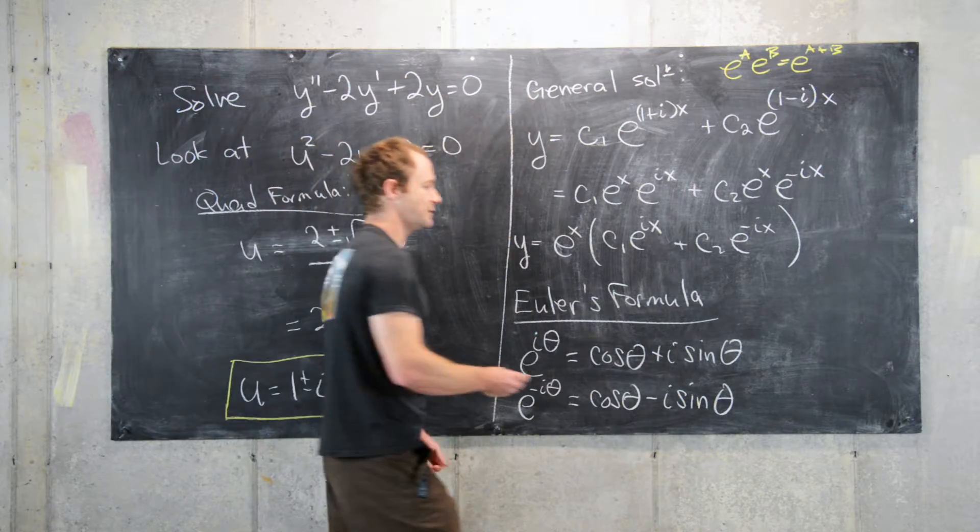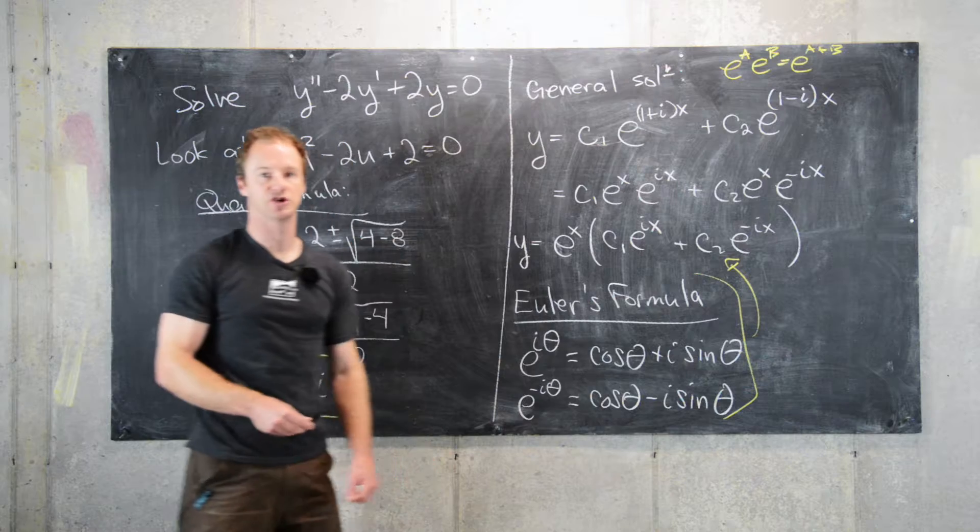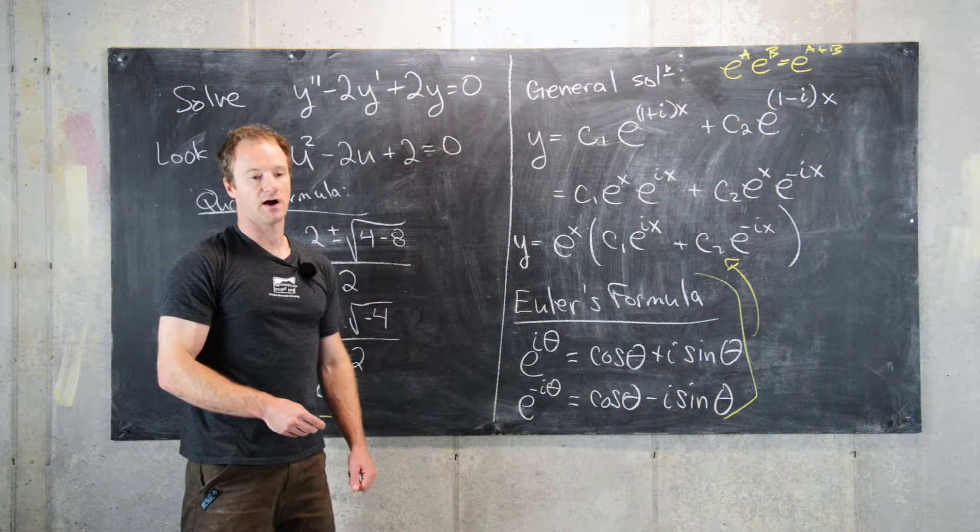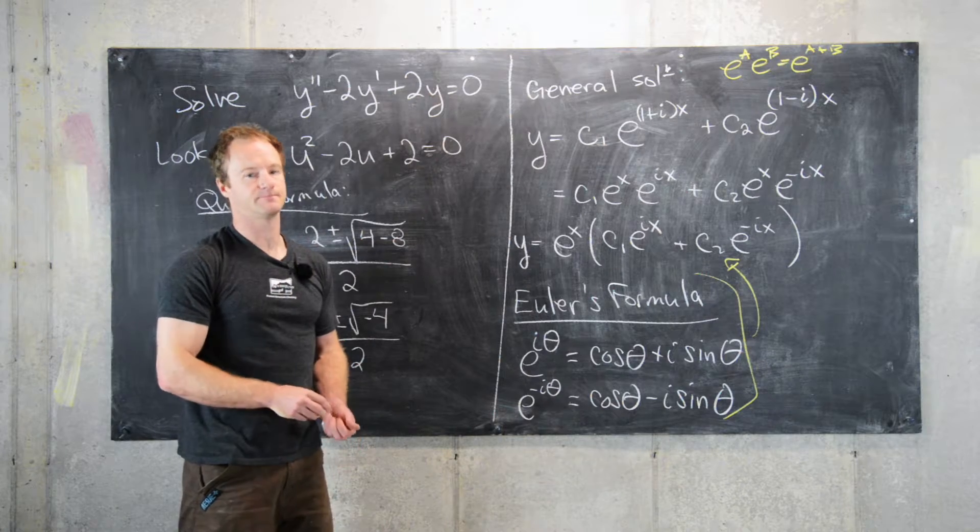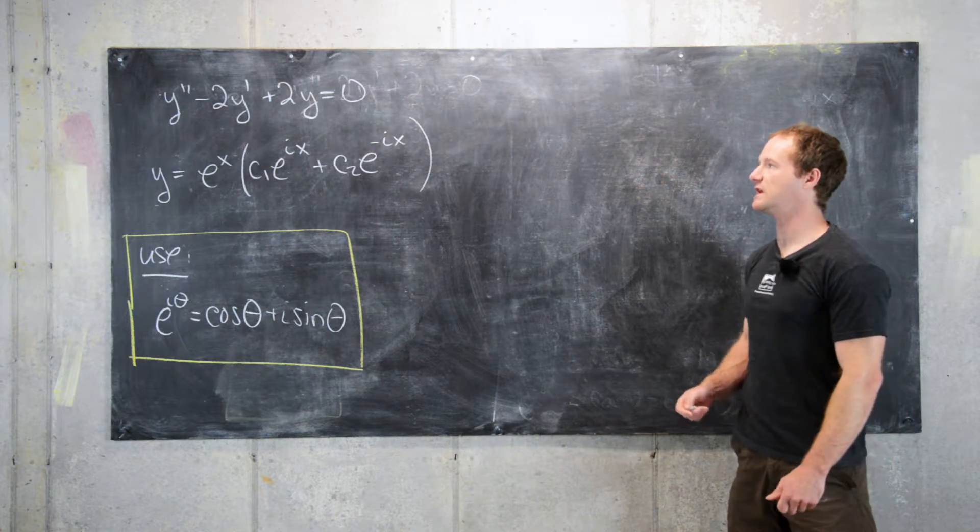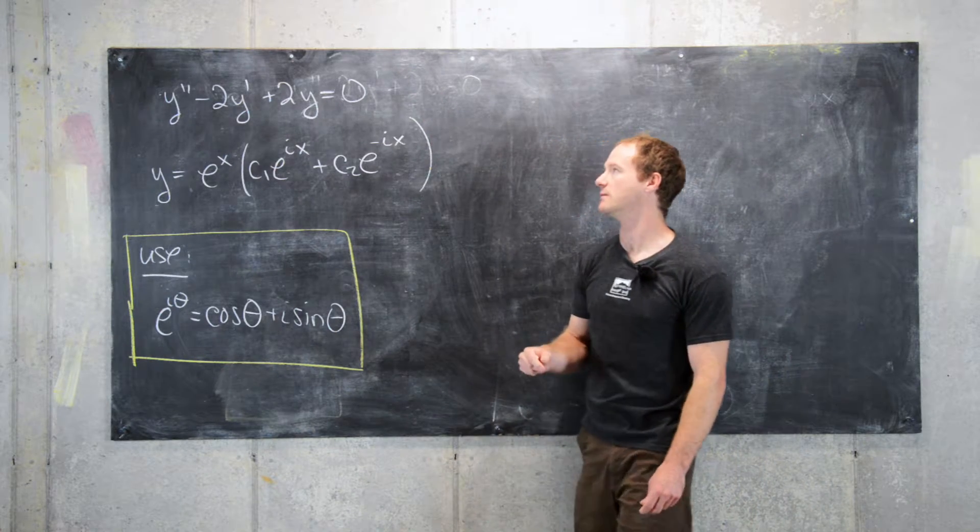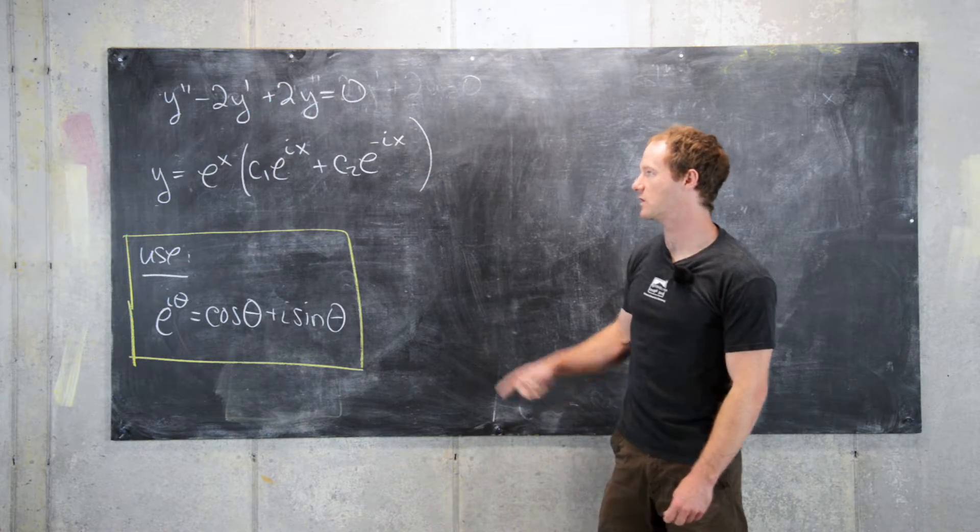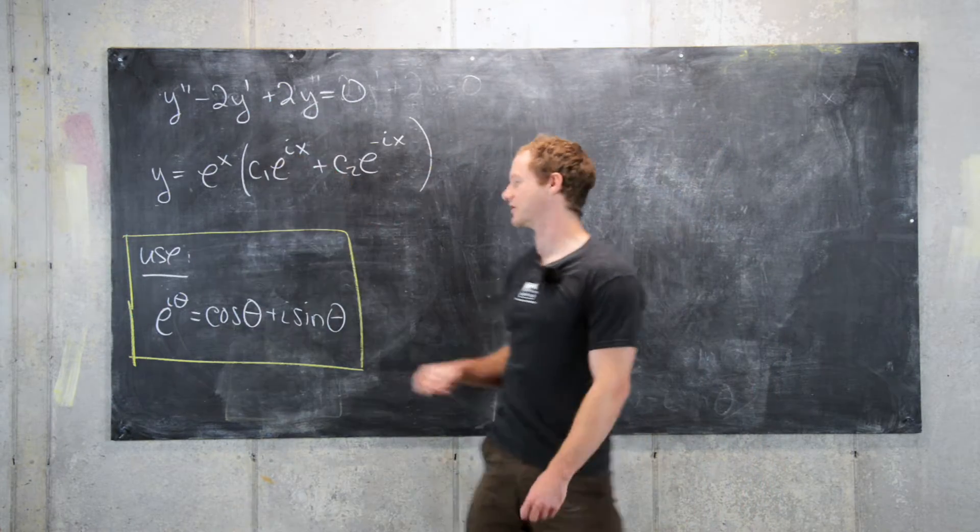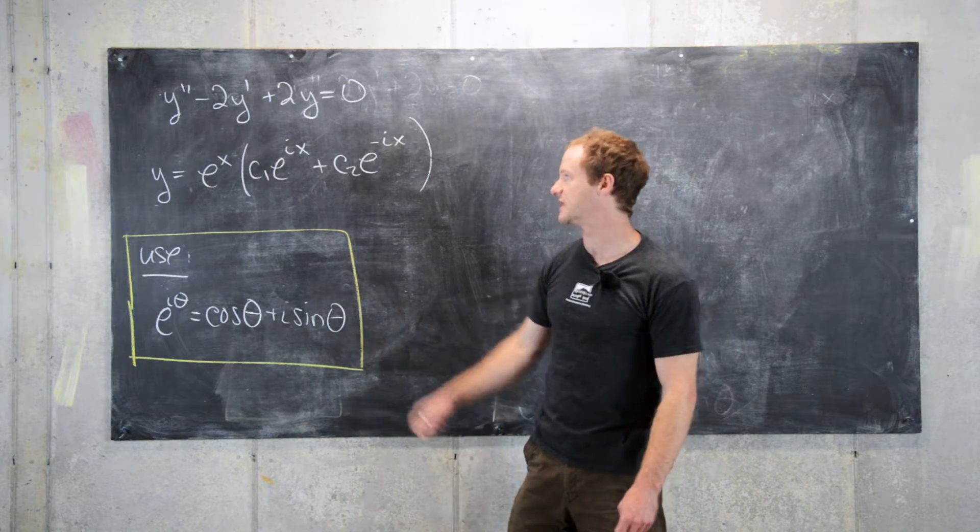So now what we want to do is use Euler's formula in this general solution, move things around until we have something that only has real values in it. So I'll clean up the board and then we'll do that. Okay. So in our previous step, we ended here. So we started with this differential equation, y double prime minus 2y prime plus 2y equals 0. We got that the general solution is of this form with these imaginary exponents. And the hint was to use Euler's formula, which is given here.